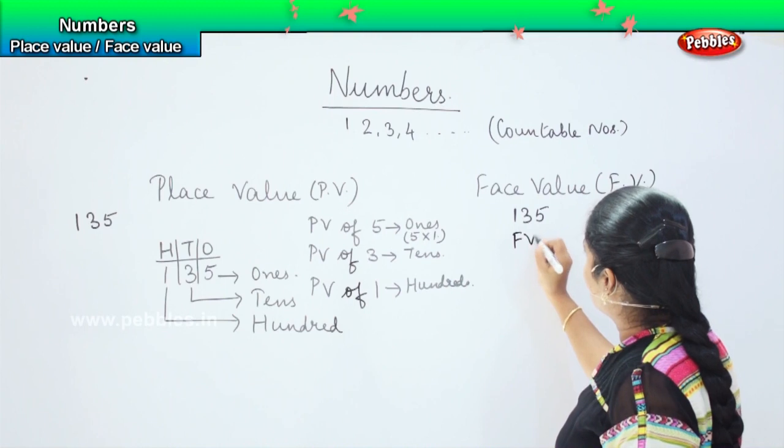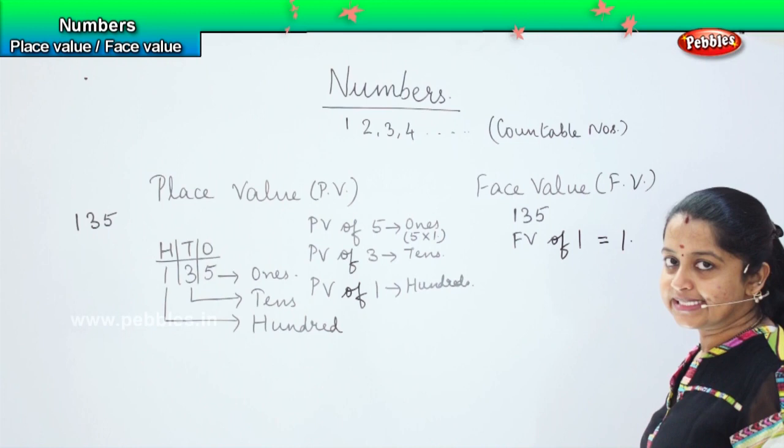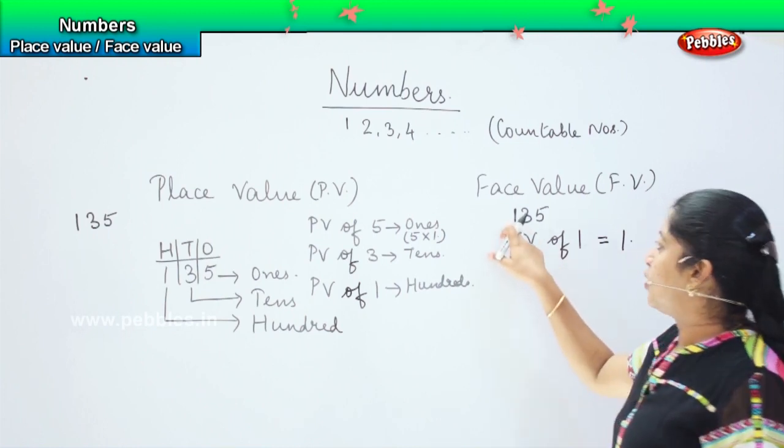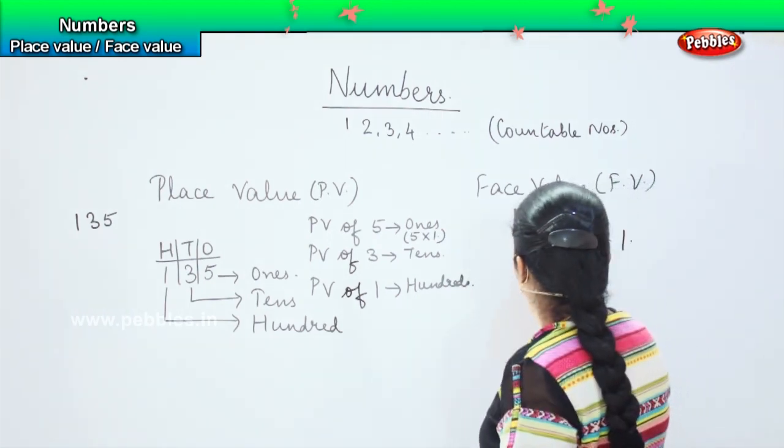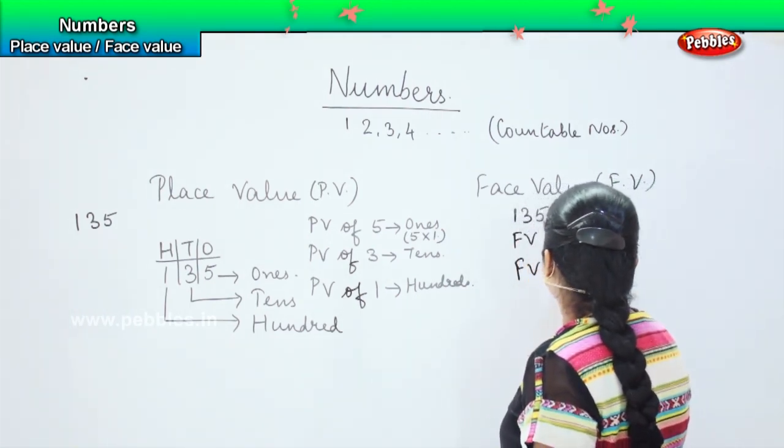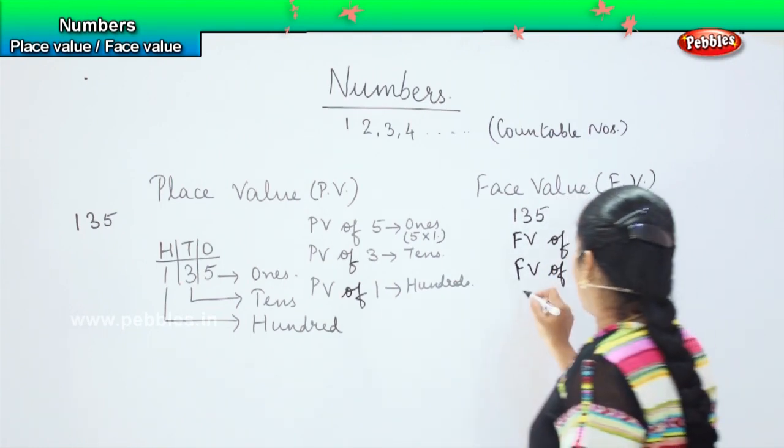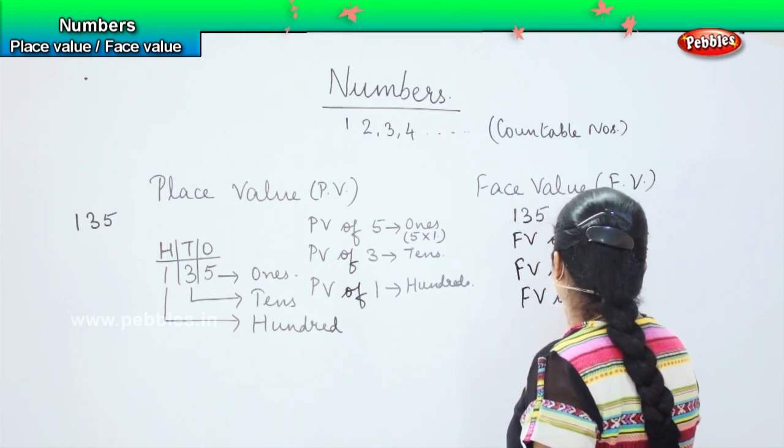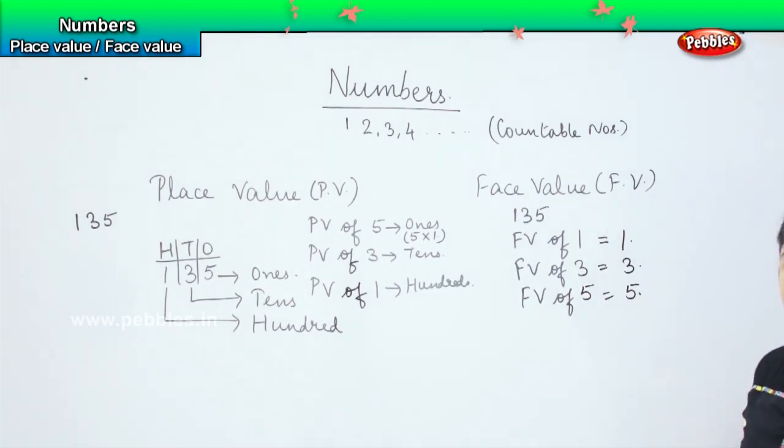The face value of 1 equals 1. As I told, here it is talking about the value of the number. So here you do not have to see what is the position of the numbers. Whatever is the number given, that will remain the face value. What will be the face value of 3? It will be the same, 3. And what will be the face value of 5? Very good, it will remain the same, 5.